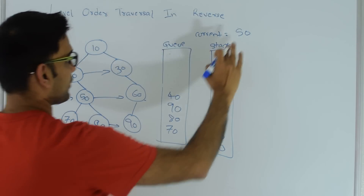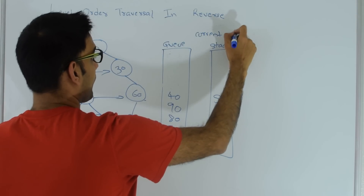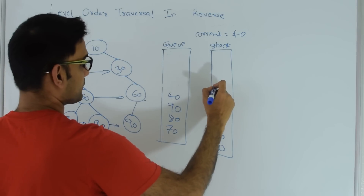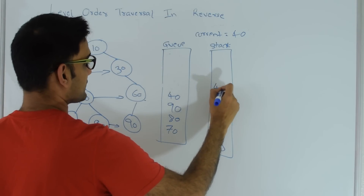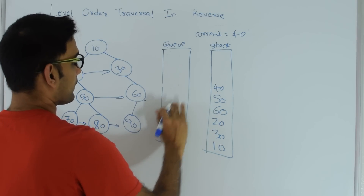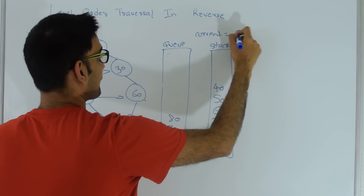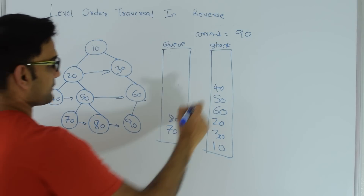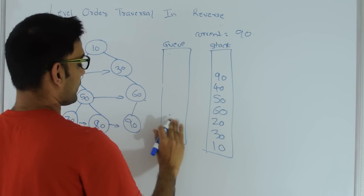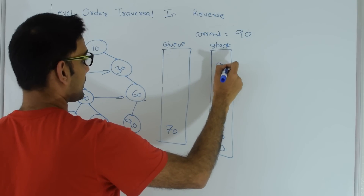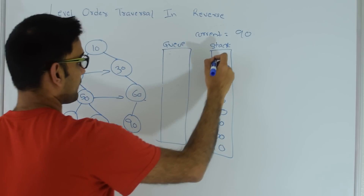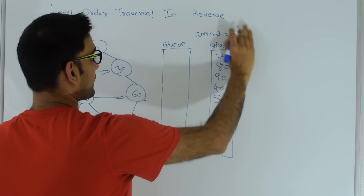Finally I take out 40. 40 does not have a right or left child so I just push 40 into the stack. Then I take out 90 — current becomes 90. 90 does not have right or left child so I just push that into the stack. Similarly, 80 comes out and 80 does not have right or left child, and then 70 comes out and 70 does not have right or left child.